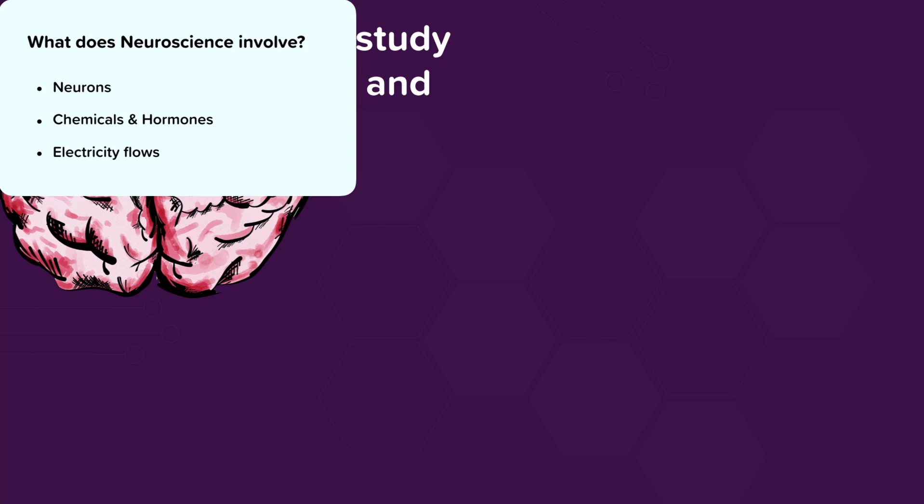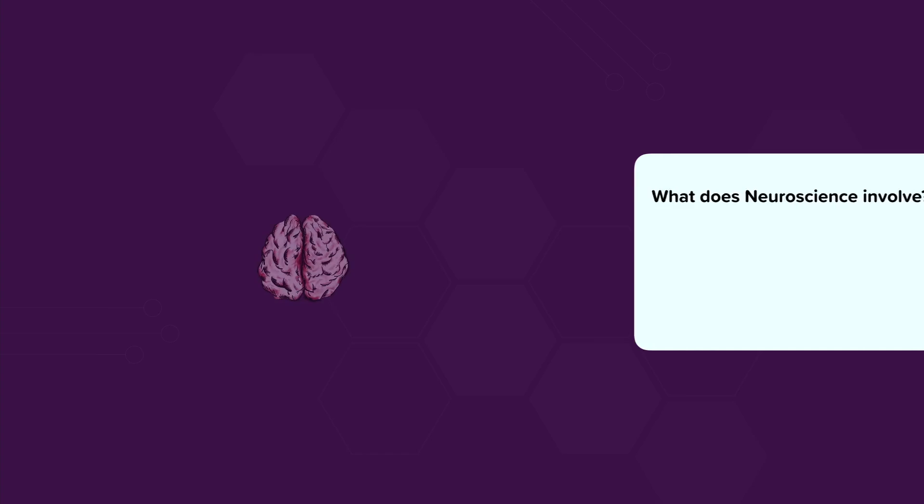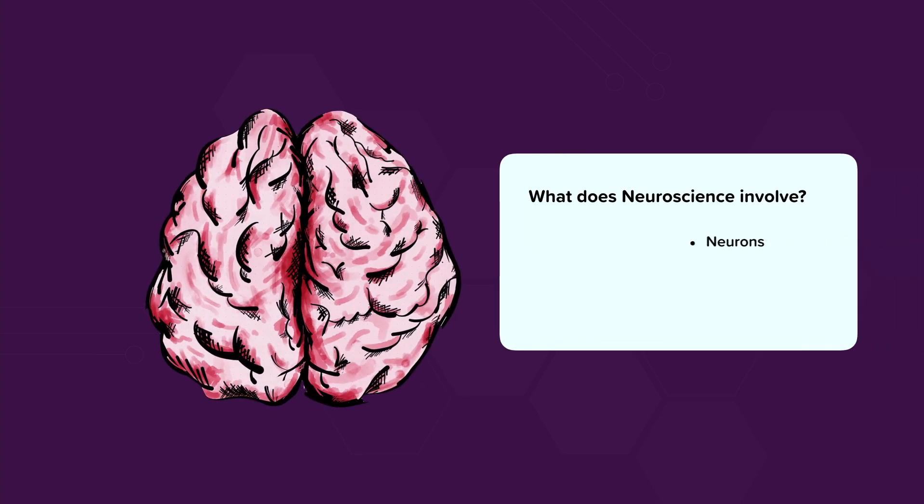And so on to neuroscience. Neuroscience is the study of the physical structure and function of the brain. It's about neurons and what is going on at a cellular level in the brain, chemicals and hormones in the brain and how they affect brain function, and it's also about electricity flows and how the flow of information takes place with electricity.